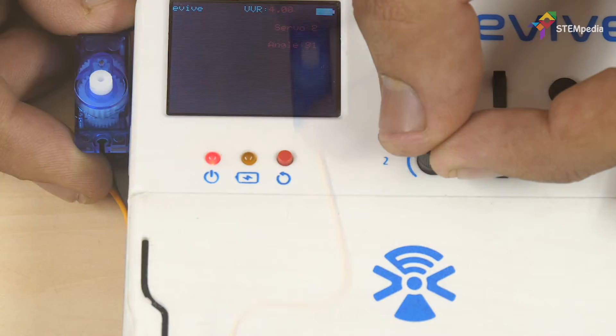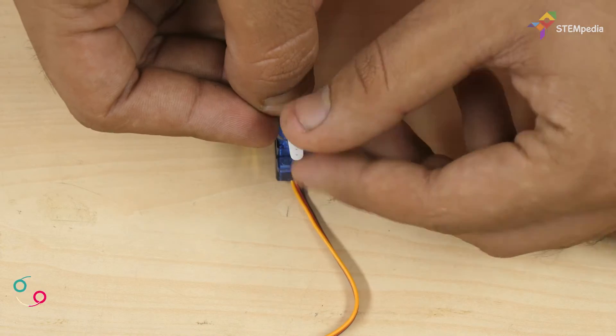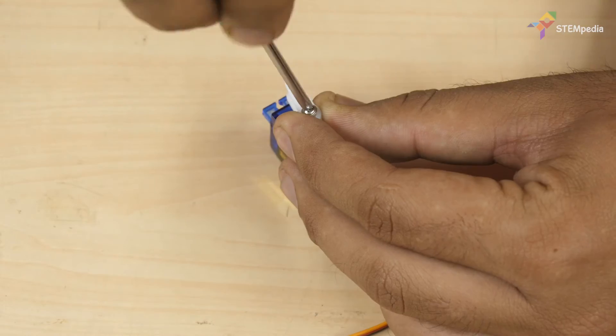Take one single-sided servo horn and one double-sided servo horn and attach them to the servo head using a 20mm servo screw.